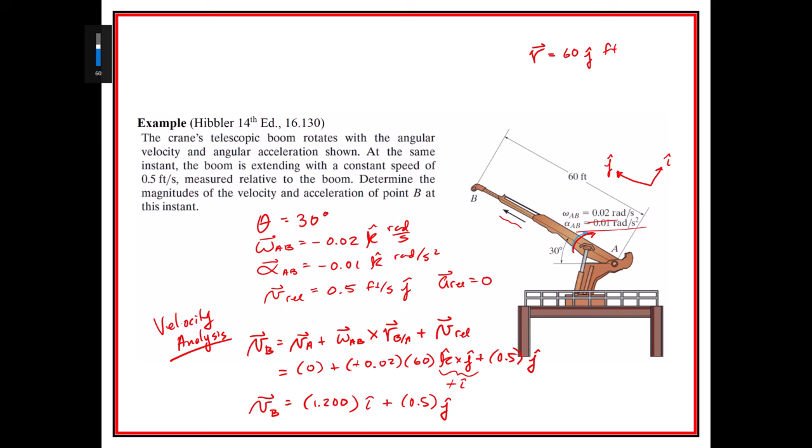And then if we were to take the velocity of B and take the square root of the two things squared, we find that we get 1.300 feet per second. And I think they wanted the magnitudes, so that was just answering that question.